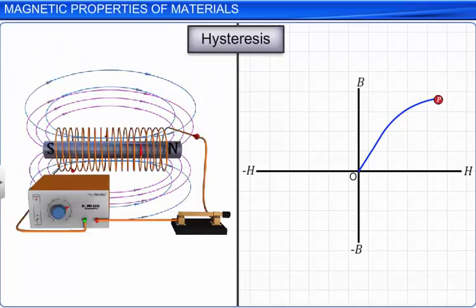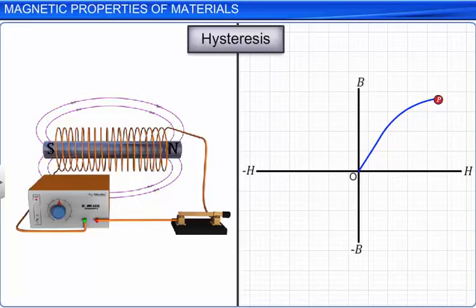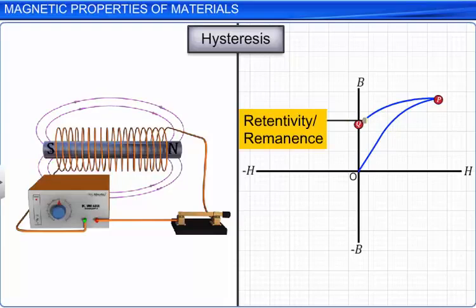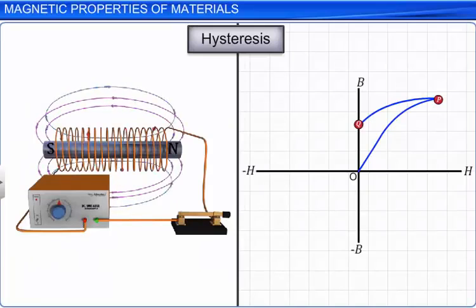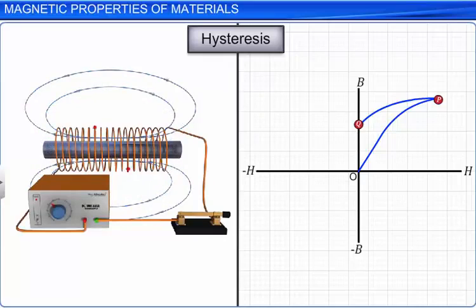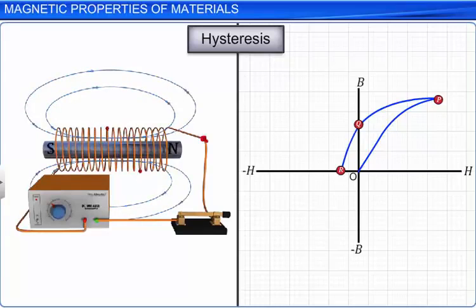By reducing the current through the solenoid, the applied magnetic field H decreases to zero. When H equals zero, the magnetic field strength in the ferromagnetic material B is not equal to zero, and this is represented by the curve PQ in the graph. The value of B at H equals zero is called retentivity or remanence. Now increase the current through the solenoid in a direction reversed to that of the previous one. Thus, certain domains in the ferromagnetic material are flipped until the net field inside it stands nullified. This is represented by the curve QR in the graph. This magnitude of applied magnetic field H is known as coercivity.